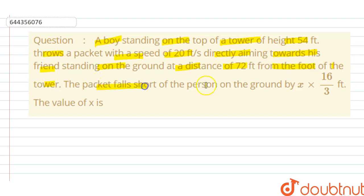the foot of the tower. The packet falls short of the person on the ground by x times 16/3 feet. The value of x is - so we have to find the solution of this question.